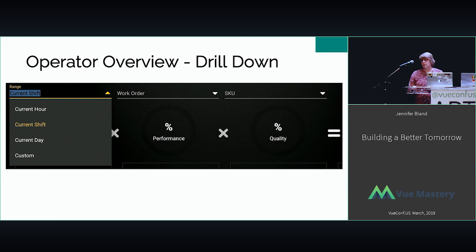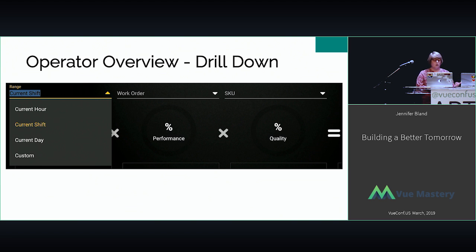If the operator wants to look at more details, they can look at not just the current shift — they can look at all the production on their line, for example the past hour, everything happening for the current day, or a different time frame entirely.